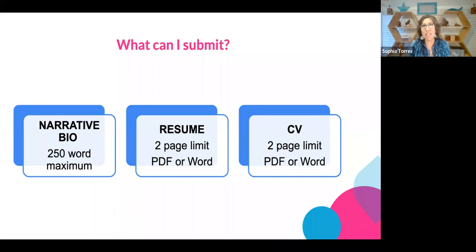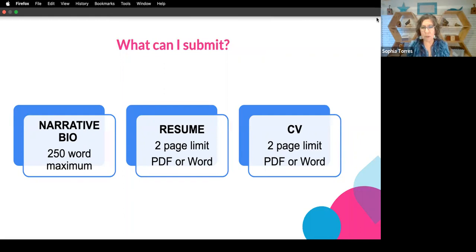The ways that you can tell us about yourself: you can provide a narrative bio that's 250 words maximum, provided through the text box in Submittable. You can also submit your resume or a CV. Both of those formats need to be two pages, limited and as a PDF. Submittable will allow Word files, so just check to make sure you have the right format. They are all weighed equally — not one above another. They're all going to be viewed equally.